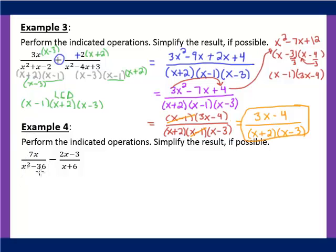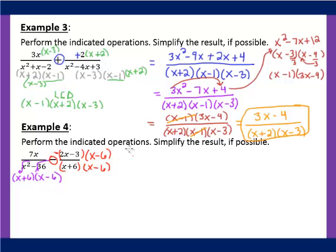Example 4. To get our common denominator, let's factor x² minus 36 — since it's a difference of two squares, we take the square root of both terms and factor it into (x plus 6)(x minus 6). Our denominator needs (x plus 6)(x minus 6) from the first fraction and x plus 6 from the second fraction. So we multiply the second fraction by (x minus 6) on the top and bottom. Remember that the subtraction sign means a negative comes along with what we're distributing.